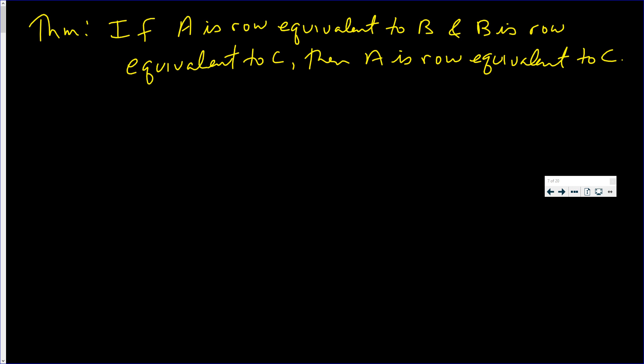In this video we're going to show that if A is row equivalent to B and B in turn is row equivalent to C, then A is row equivalent to C. The transitive property.